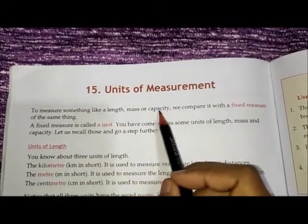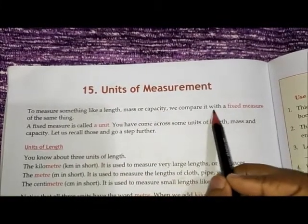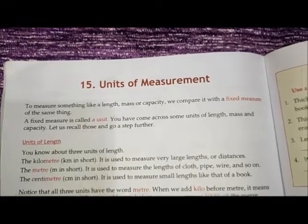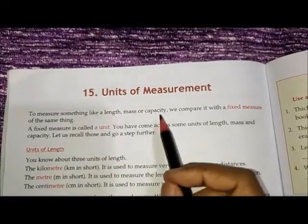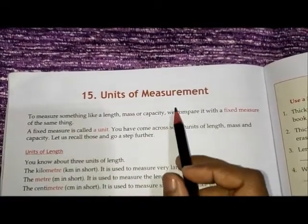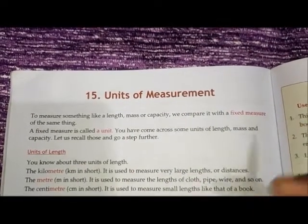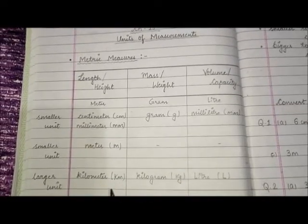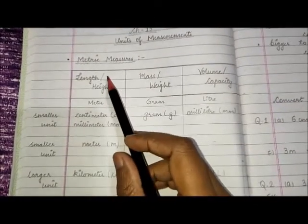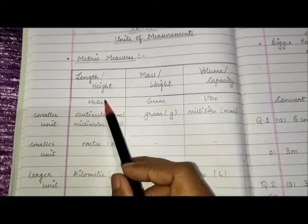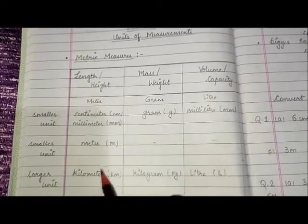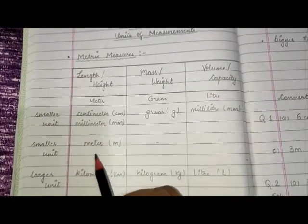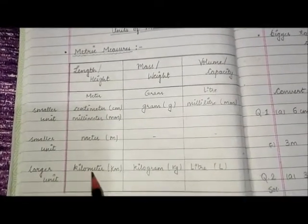To measure something like a length, mass or capacity, we compare it with a fixed measure of something, and a fixed measure is called a unit. So we measure length, mass and capacity. These are the metric measures. To measure length or height we use meter, centimeter, millimeter or kilometers. Centimeter and millimeter are smaller units, meter is also a smaller unit, and kilometer is the larger unit.